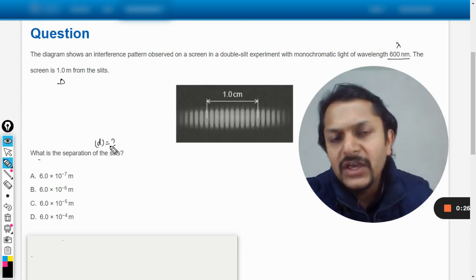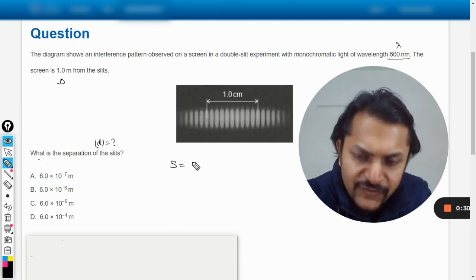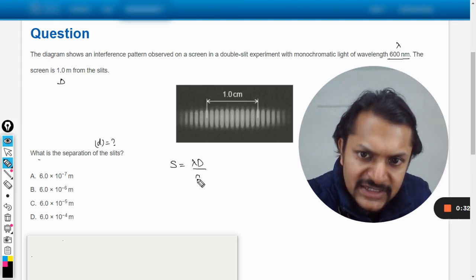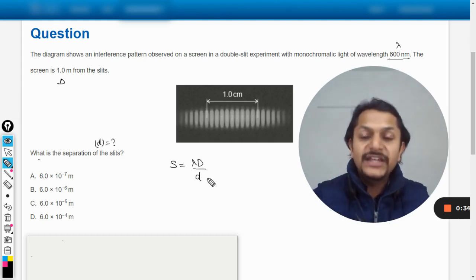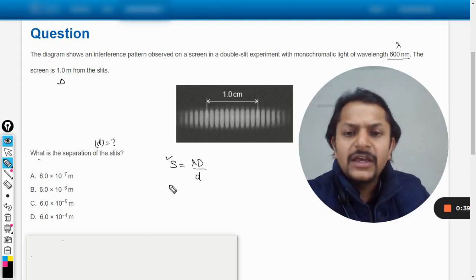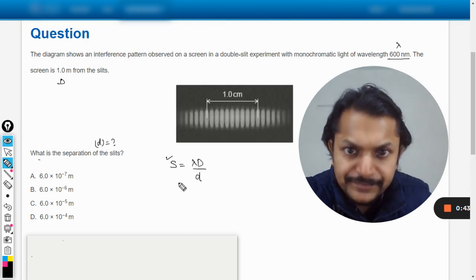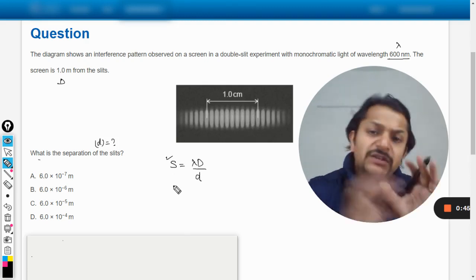So d we want to find. We must know the fringe spacing. We know that the fringe spacing formula is lambda capital D by small d, and this is also available in the data booklet, so you can verify that in the examination if you ever have a confusion there.